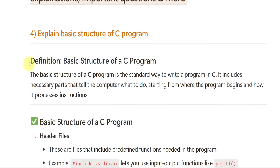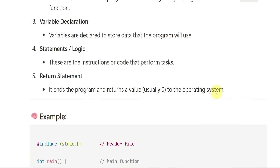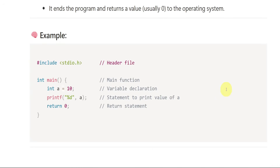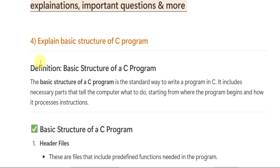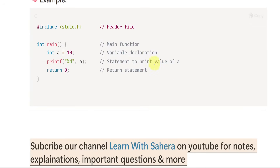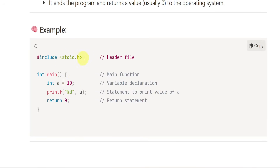So the basic structure is: first header files, then main function, variable declaration, statement/logic, and return statement. If you write all of this, you will get 5 marks easily. If you want 3 more marks, write the example as well. That's all — 8 marks will be in your hands.